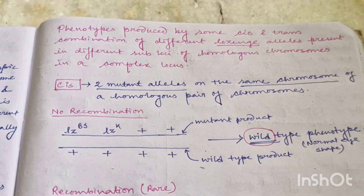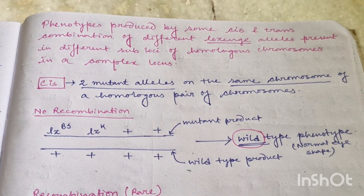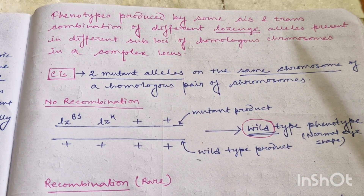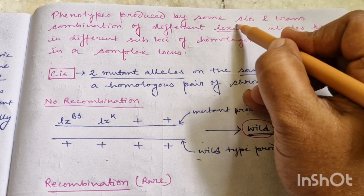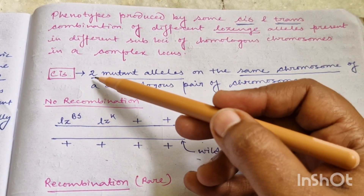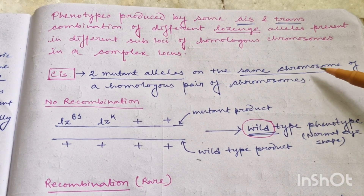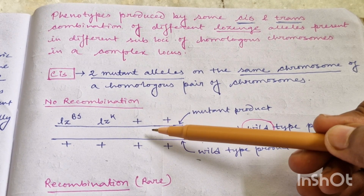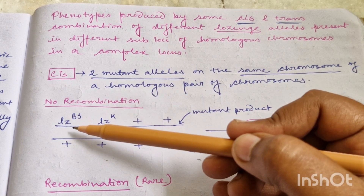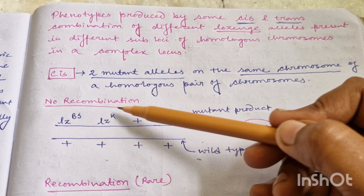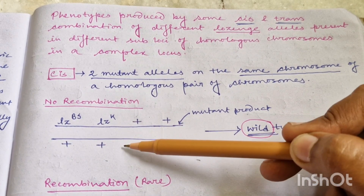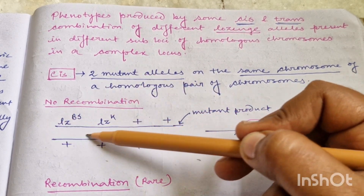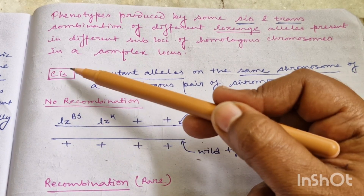Let us understand what will be the phenotypic effect produced by cis and trans combinations of different Lozenge alleles present in different subloci of the homologous chromosomes in a complex locus. There are two combinations possible: cis combination and trans combination. Cis combination means when two mutant alleles are present on the same chromosome of a homologous pair. In this picture, the two mutant alleles LZBS and LZK are present on the same chromosome, whereas the other chromosome of the homologous pair contains all wild type alleles.